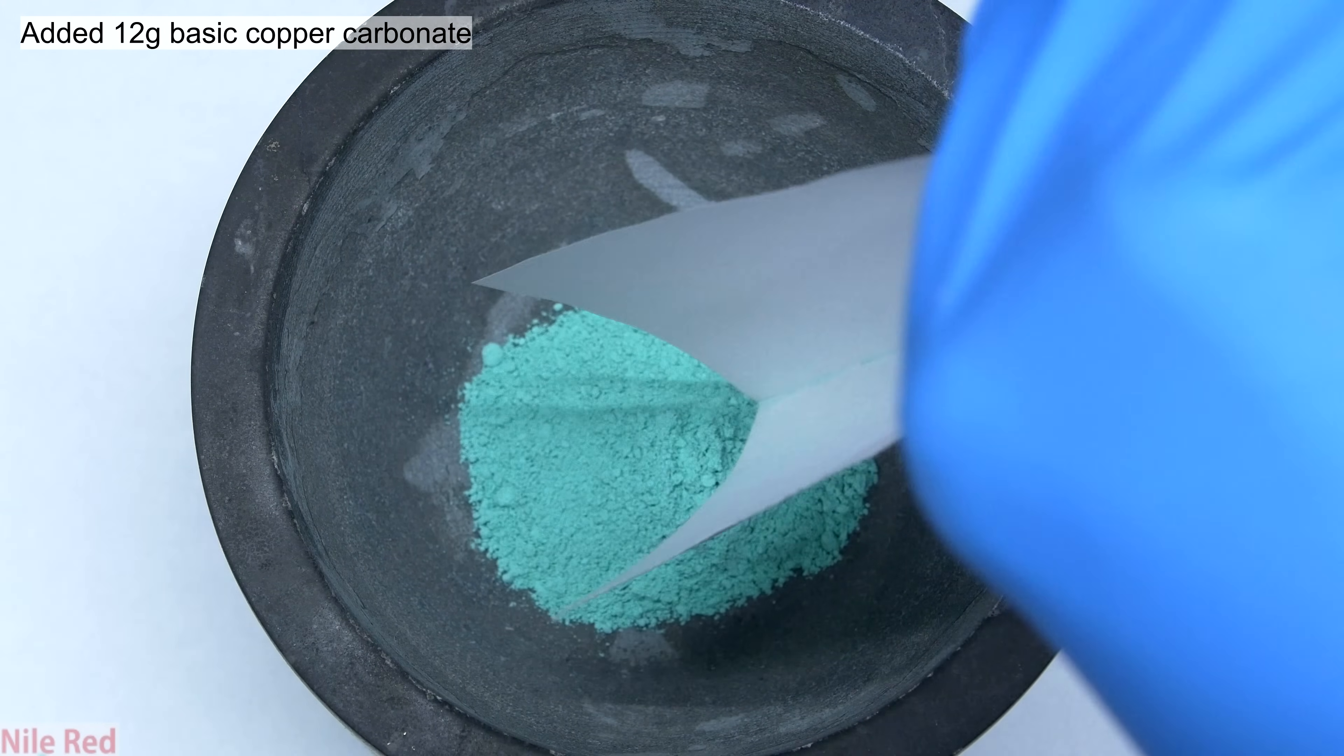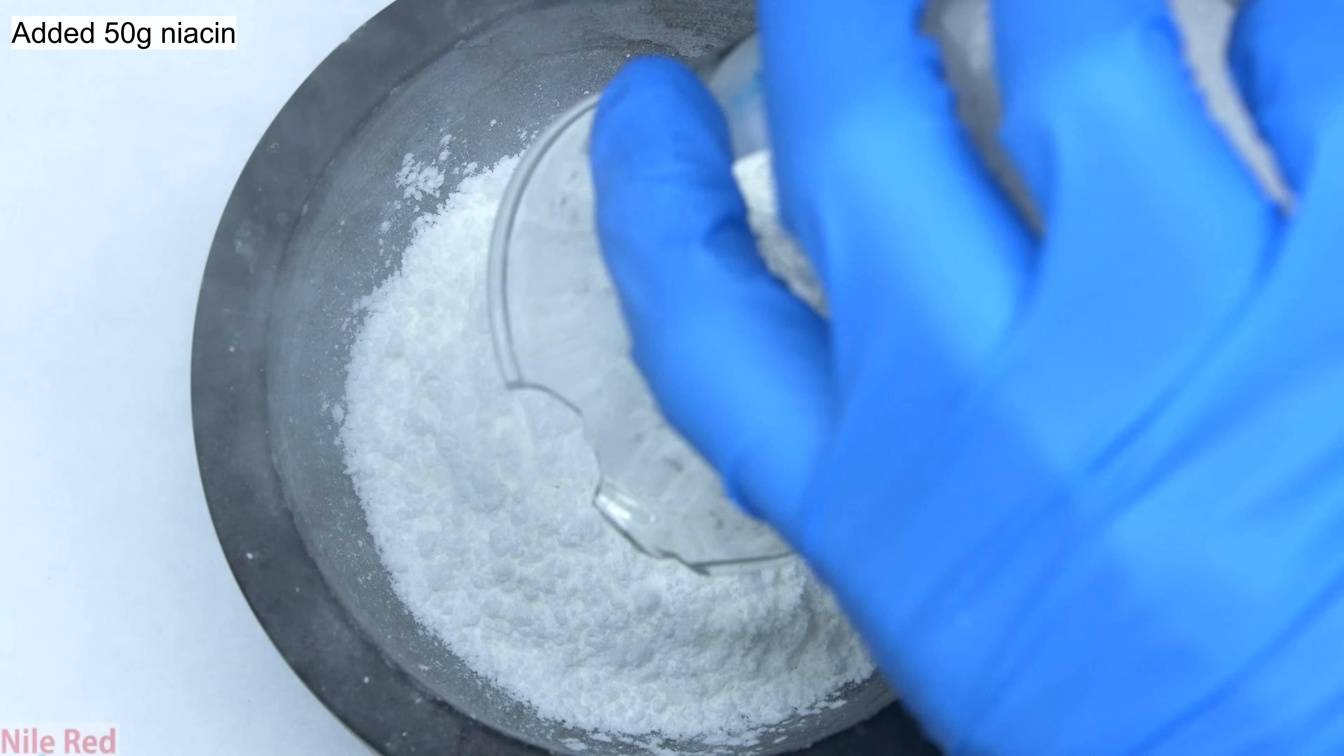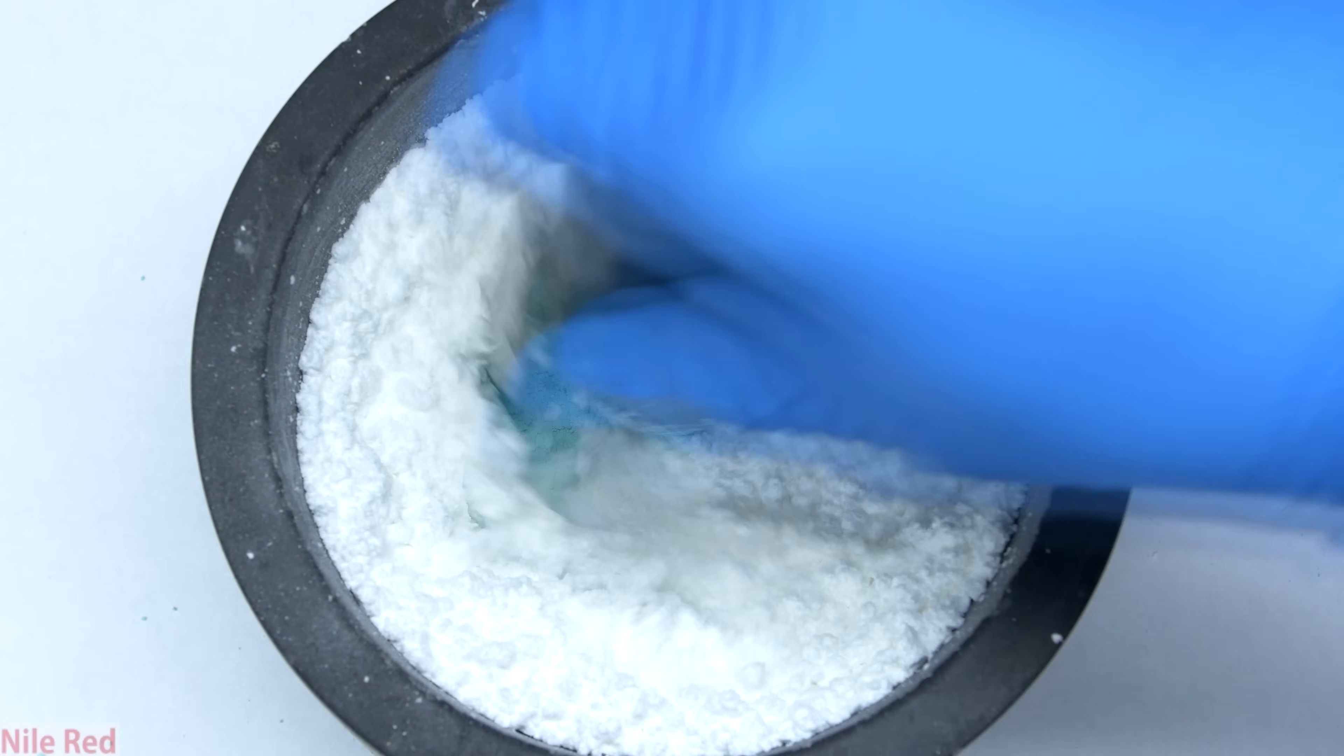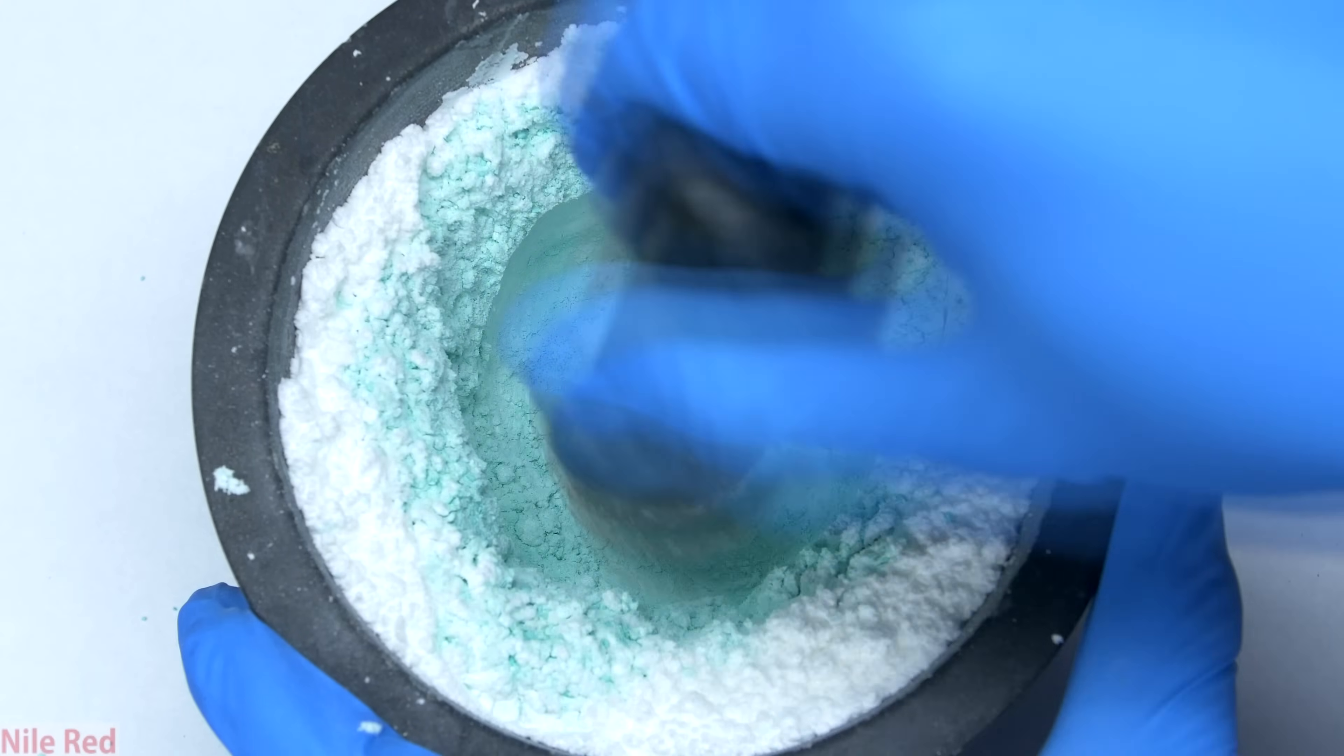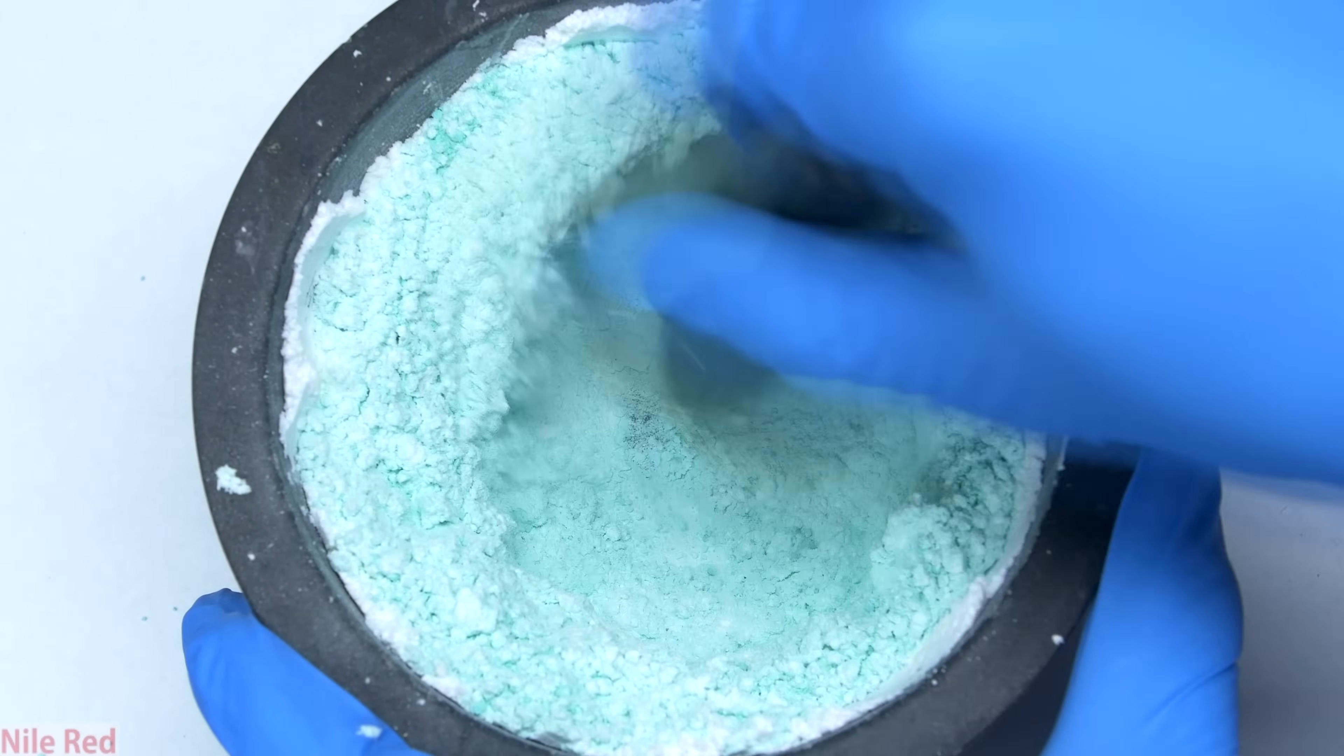To start things off, 12 grams of basic copper carbonate was added to a mortar. On top was then poured in about 50 grams of niacin. Using a pestle, I then attempted to mix the two powders, but it seemed like the niacin was still a little bit wet, and mixing was pretty much impossible.